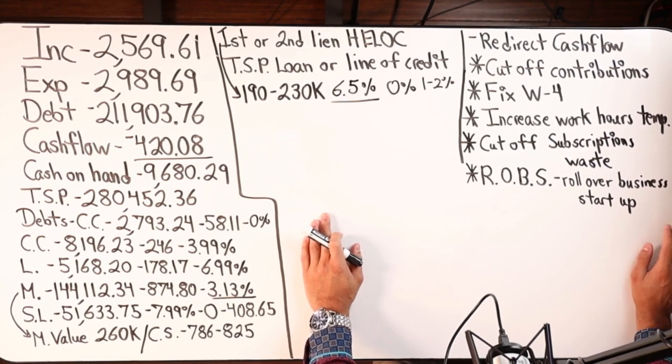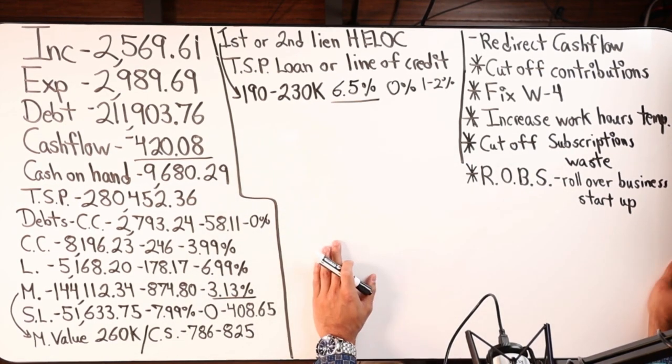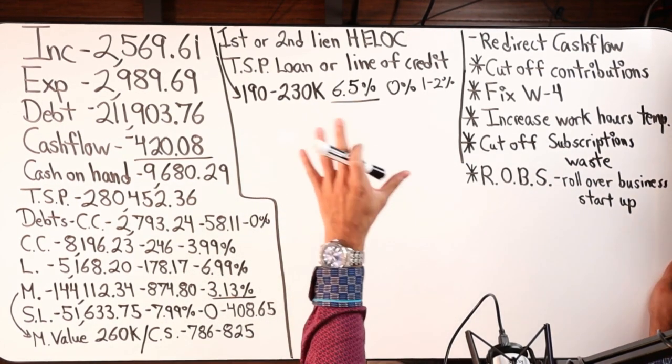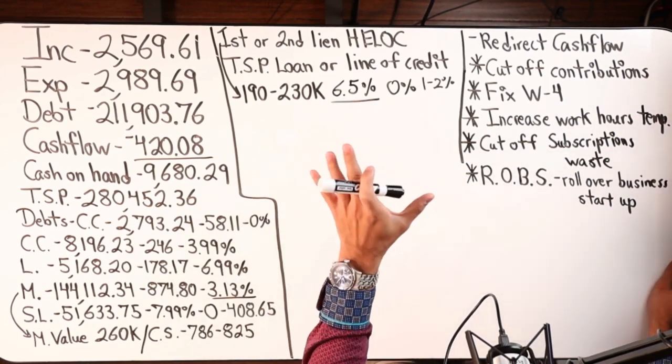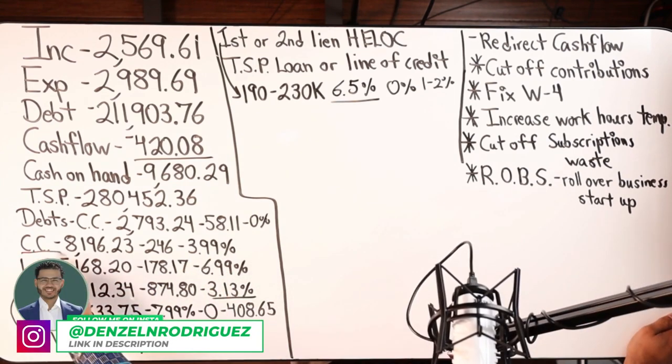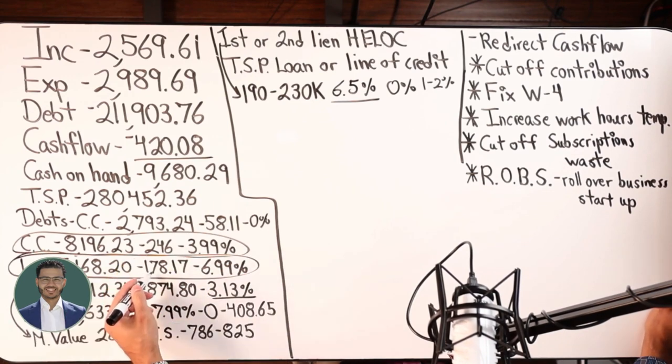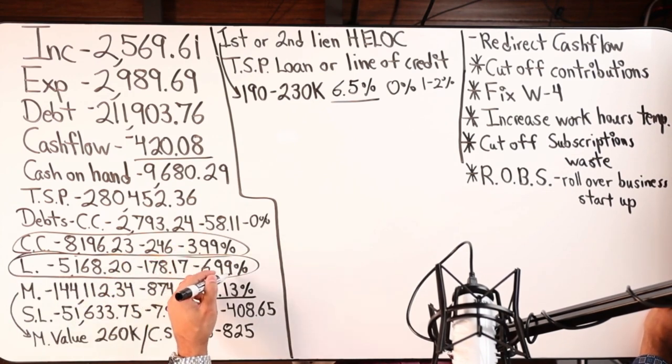But coming back to the home equity line of credit, let's say this person was able to obtain the debt tool. Great. From there I would immediately reallocate this debt and this loan - $246 and $178, 3.99%, 6.99%.